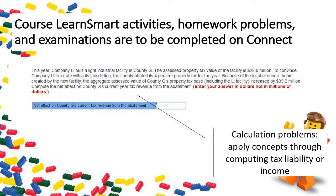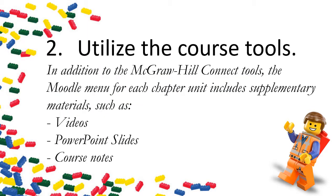The homework problems, worth 20 points per chapter, are also completed on Connect. These give you an opportunity to apply concepts related to computing tax liability or taxable income. In addition to McGraw-Hill, there are other course tools available, including course videos, PowerPoint slide decks, and other resources provided on Moodle.